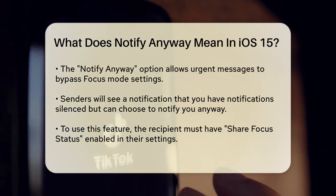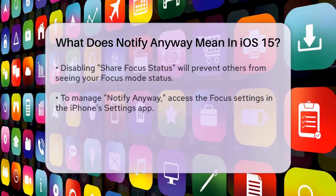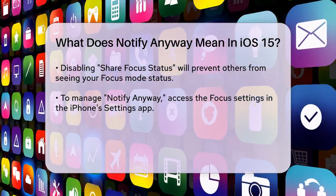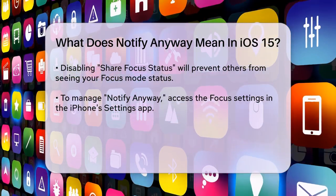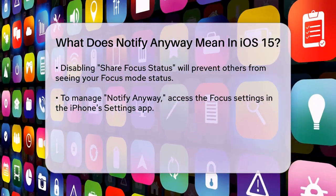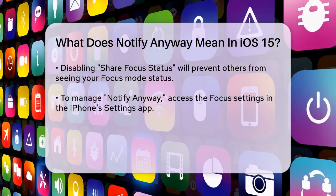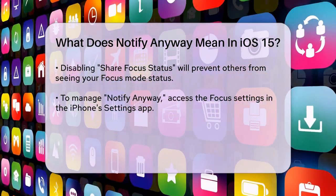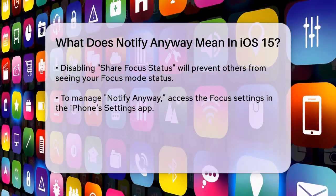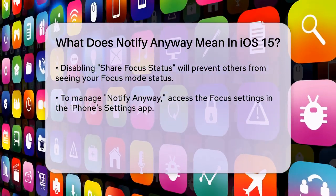You can manage the notify anyway feature by adjusting your focus settings. Open the Settings app on your iPhone, tap on Focus, select the focus mode you want to adjust like Do Not Disturb, and tap on Focus Status. Toggle off share focus status to disable notify anyway for that focus mode. If you turn off share focus status, others won't be able to see that you have a focus mode active and won't have the option to notify anyway.